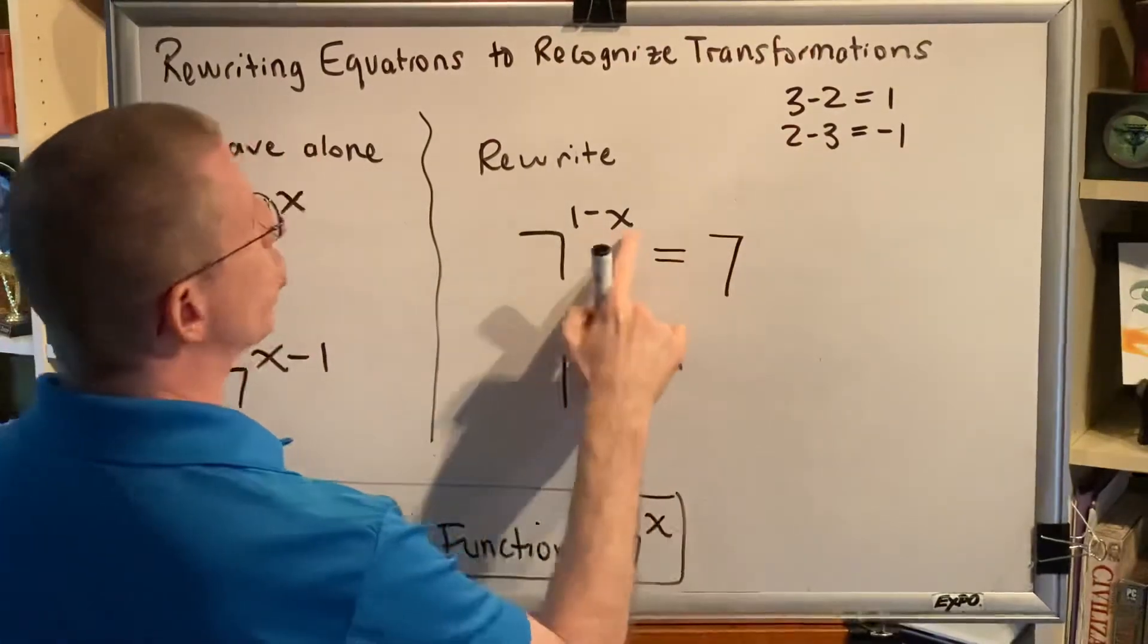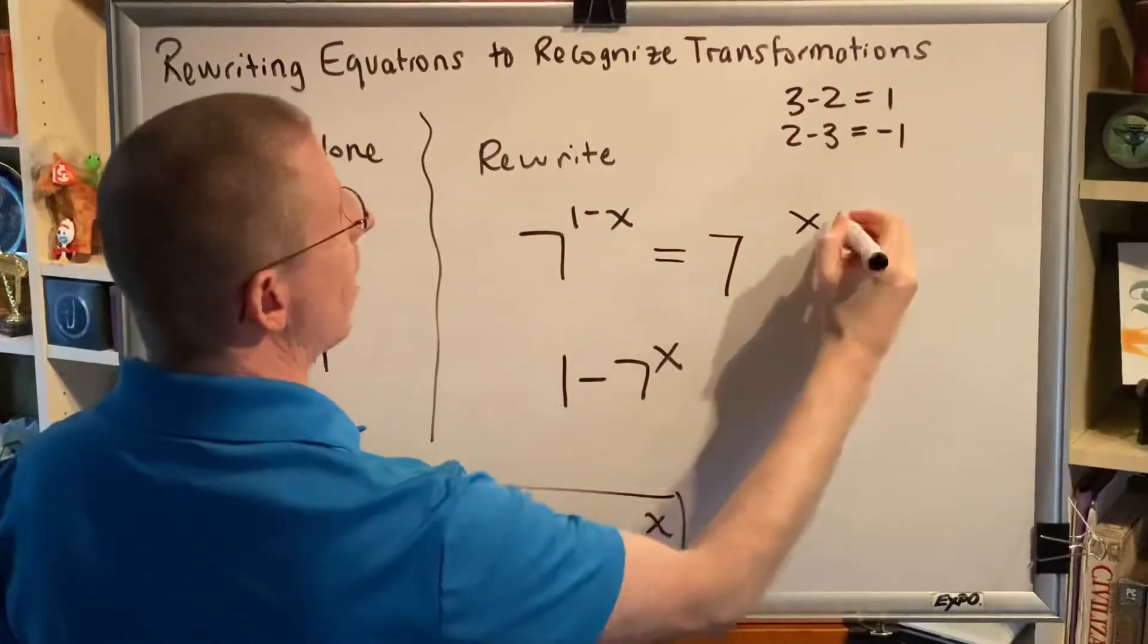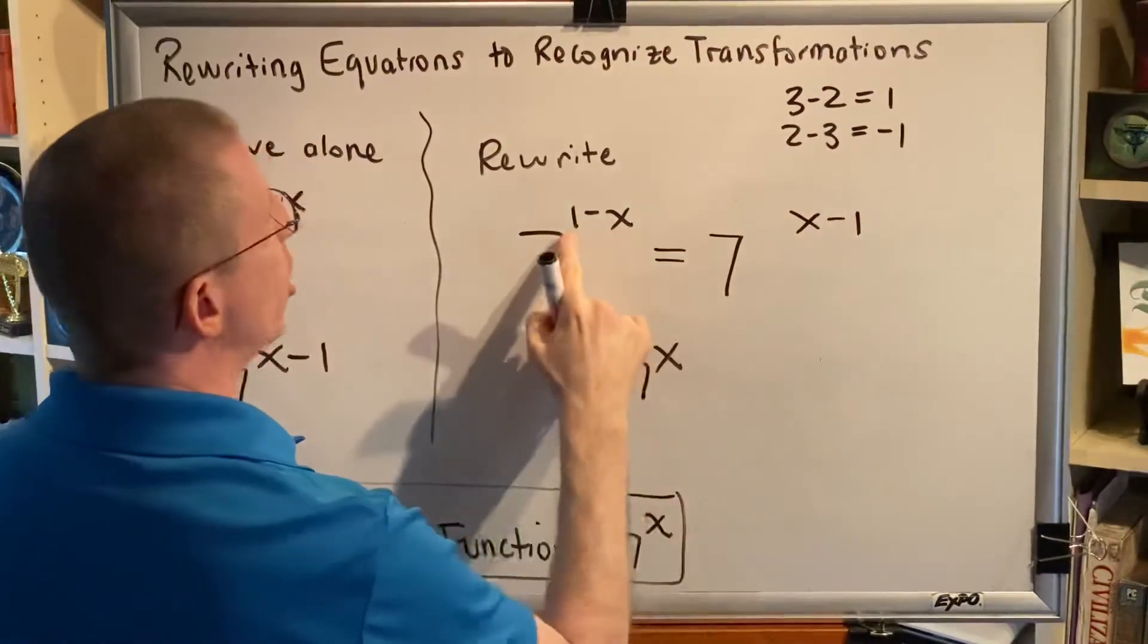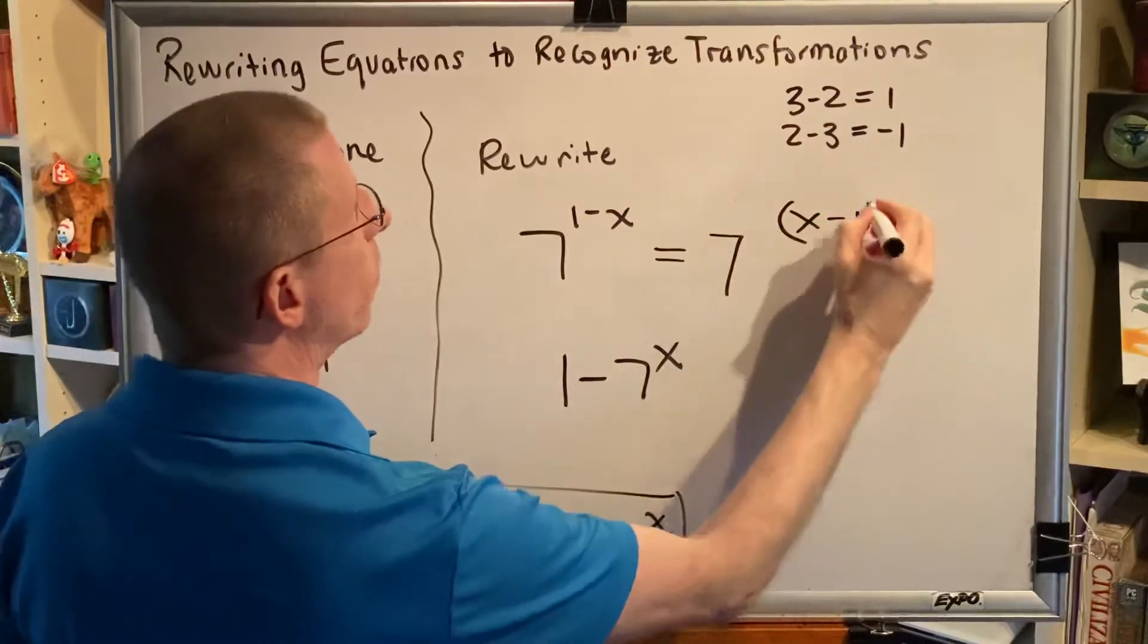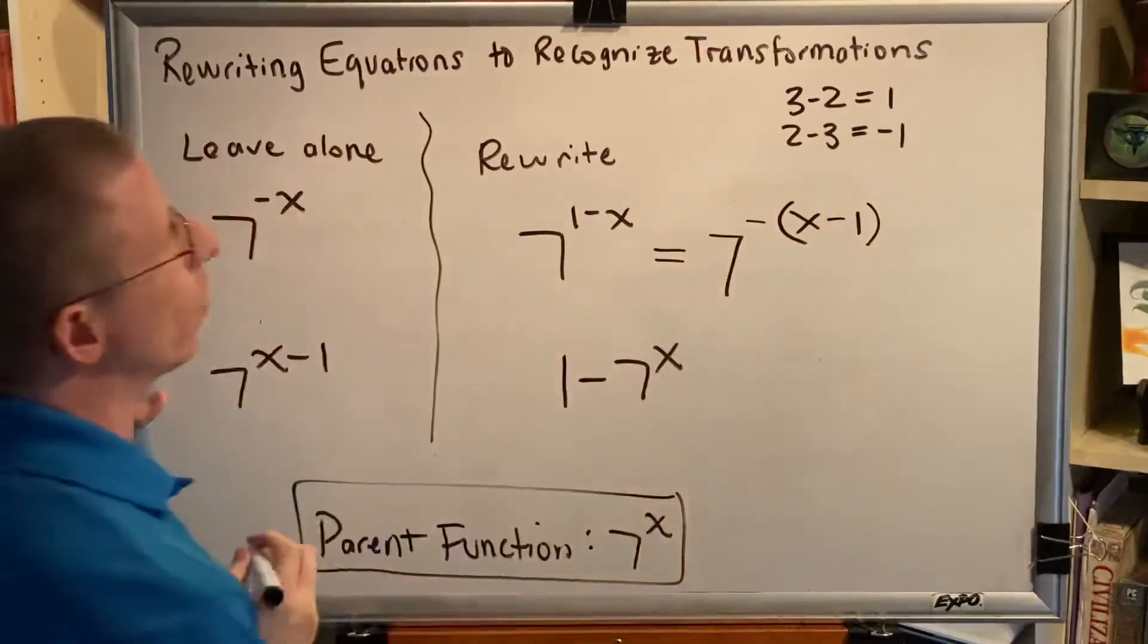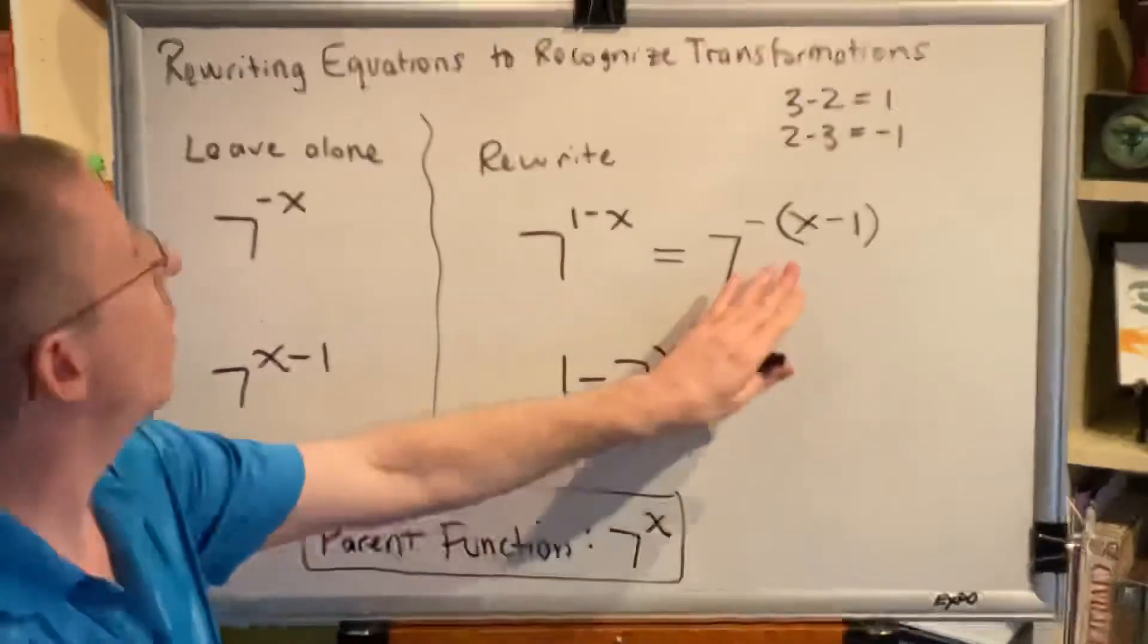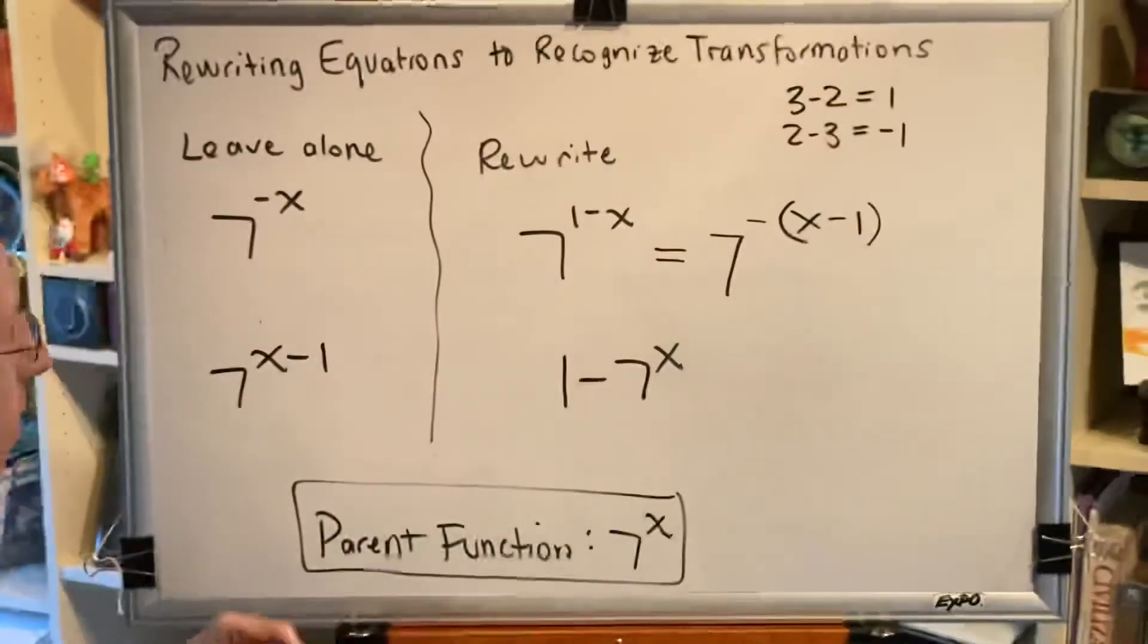We know that swapping the order of subtraction changes the sign of the answer. So if you want to change 1 minus x into x minus 1, then you have to put the whole thing in parentheses and a minus out in front of it. Now we can very clearly see that there are two transformations here.